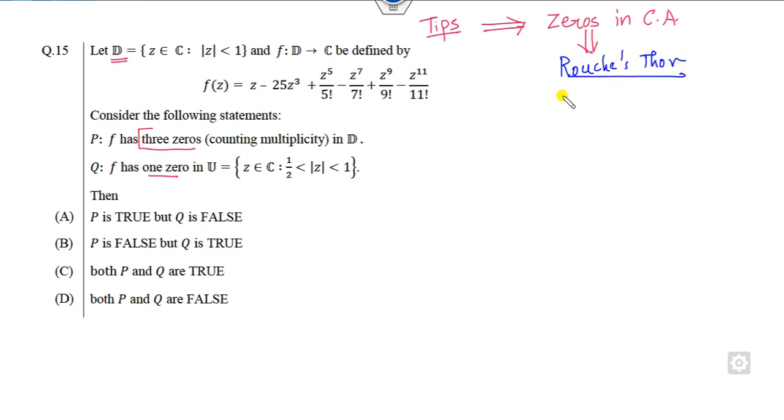What is Rouche's theorem? If you have two functions F and G such that the absolute value of F is greater than G, then F and F plus G have the same zeros. That's the simple meaning of this result.